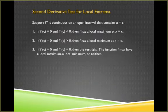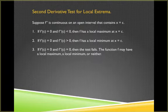So let's take a moment and look at what the second derivative test for local maximum and minimums will tell us. It says that if f double prime is continuous on an open interval and it contains a point x equals c, if f prime is 0 and f double prime is less than 0, then you have a local maximum at x equals c.